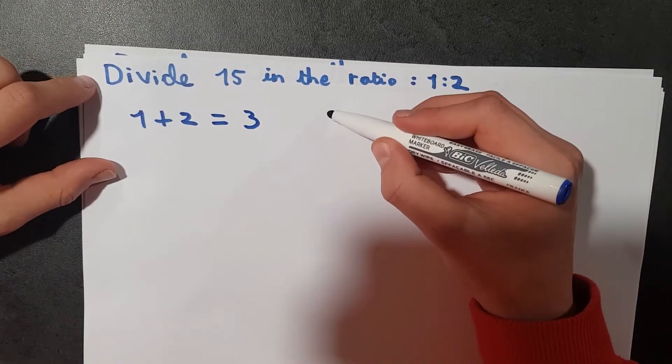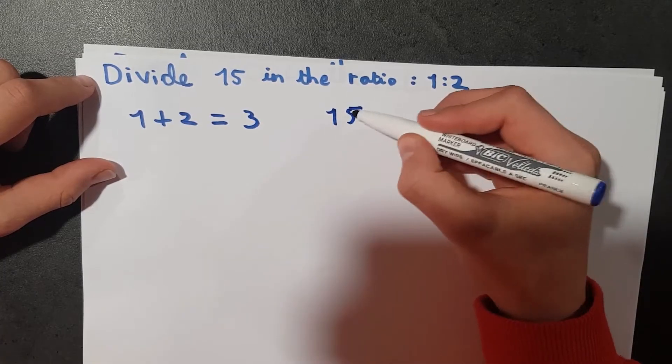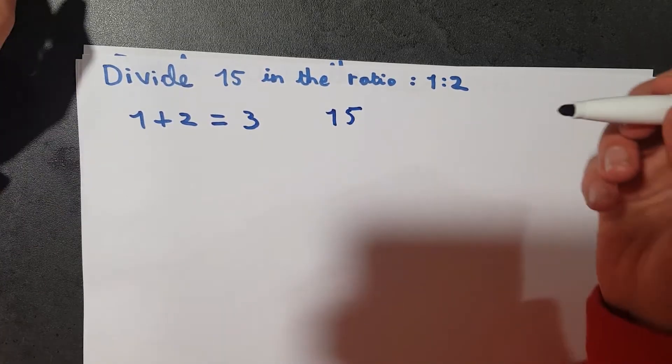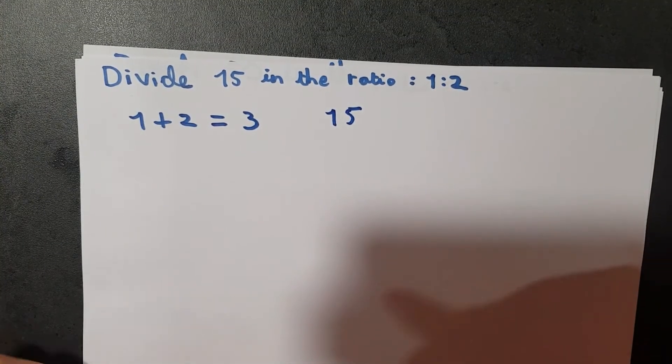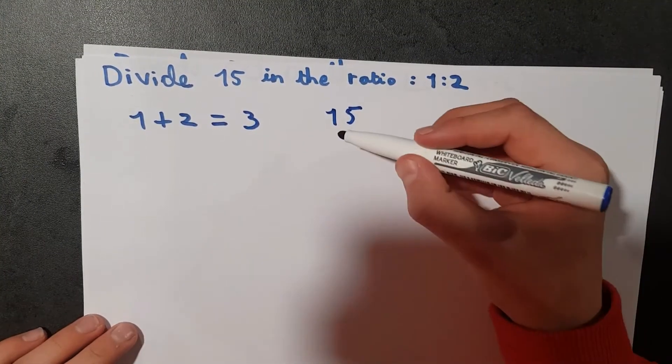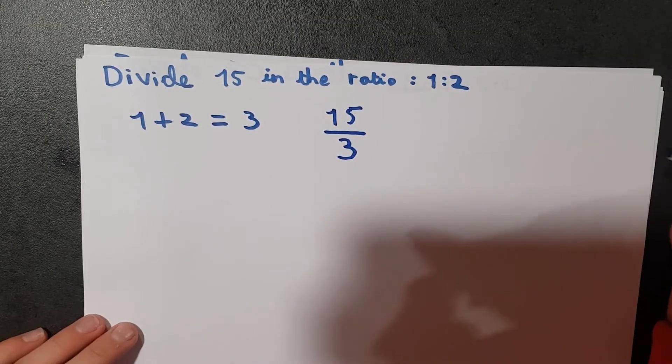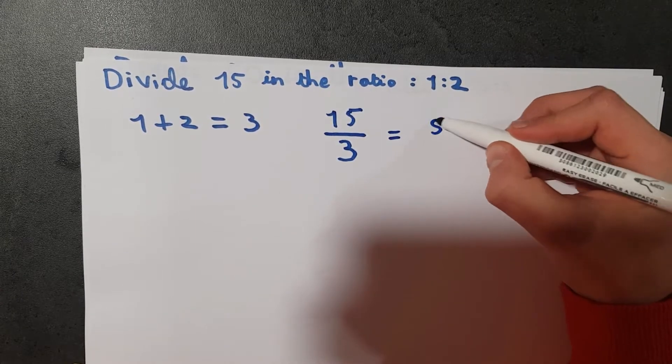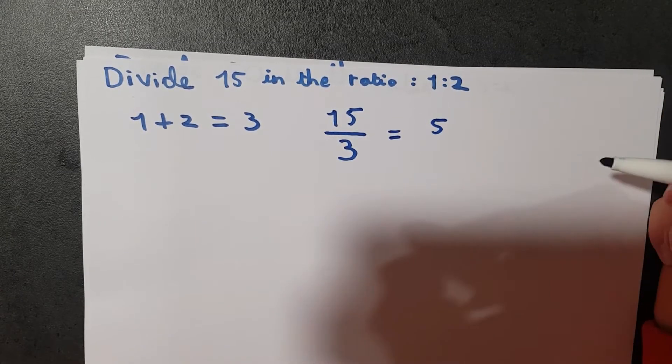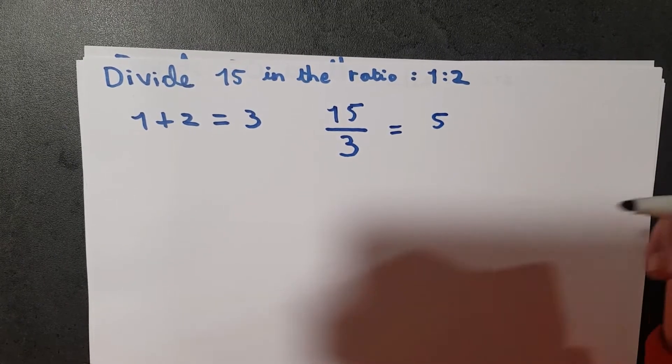at is the 15, the number that we're going to be dividing into the ratio. So in this case it's 15. So now 15, we divide that by the sum of the ratio. So 15 divided by 3, well this is 5. Now to conclude, basically we have, now we